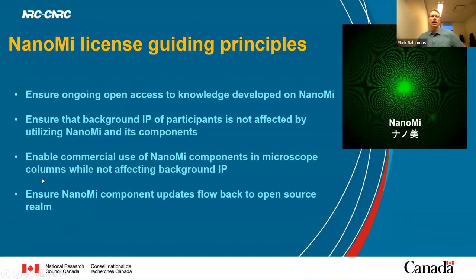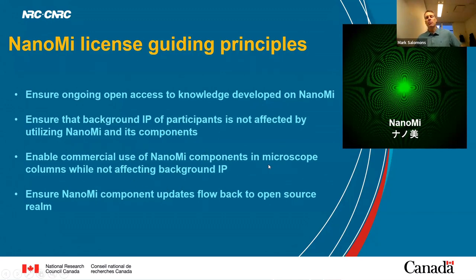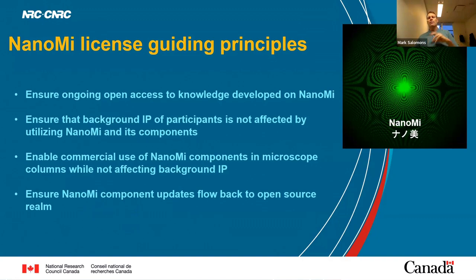The license principles are focused on ensuring ongoing open access — we don't want somebody to take it and put it under lock and key. We want to make sure the background IP of people who use it isn't affected, and we actually want people to use it commercially without affecting their background IP. A company could take these plans, build on them — say, make an aberration-corrected microscope — and that's great. We want people to use it as a base to produce things they can sell, but any improvements or updates to the core NanoME components should flow back to the open source realm.